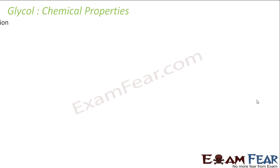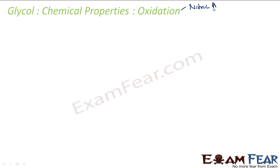Now we will talk about the chemical properties of glycol, specifically two things: oxidation and dehydration. For oxidation, the product is different depending on the condition used. If we use nitric acid we get one product; we will also discuss periodic acid and KMnO4. The output varies based on the oxidizing agent.